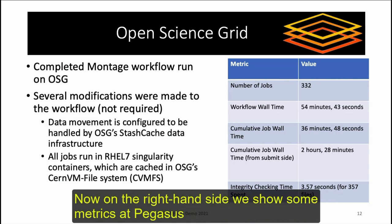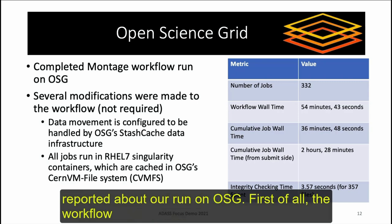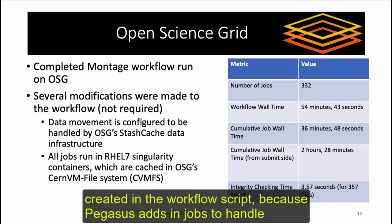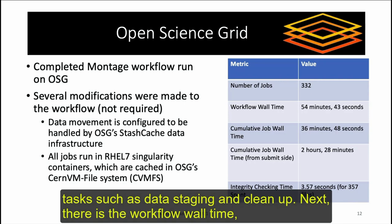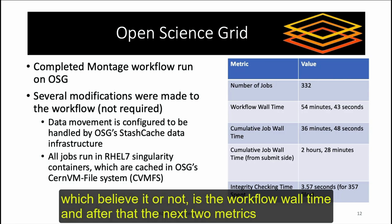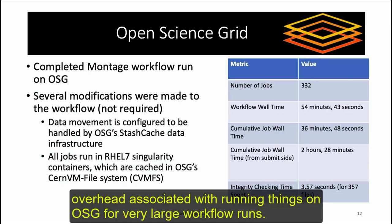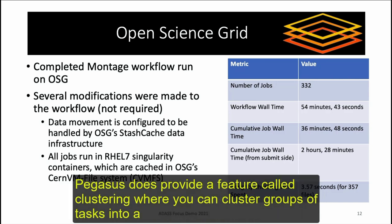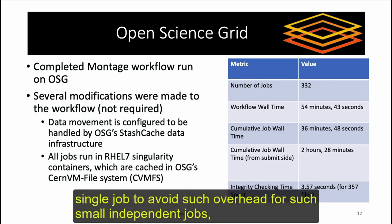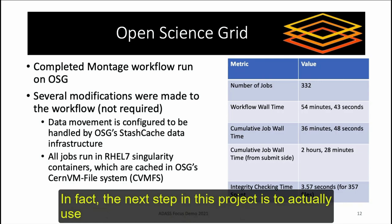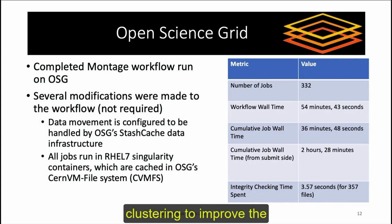On the right-hand side, we show metrics that Pegasus reported about our run on OSG. The workflow consisted of 332 jobs altogether — greater than what we created in the script because Pegasus adds jobs for data staging and cleanup. There is also the workflow wall time, and cumulative job wall times. There is some queuing overhead associated with running things on OSG for very large workflow runs. Pegasus provides a feature called clustering, where you can cluster groups of tasks into a single job to avoid such overhead for small independent jobs — precisely the kind of jobs in a Montage workflow. The next step in this project is to use clustering to improve workflow performance.